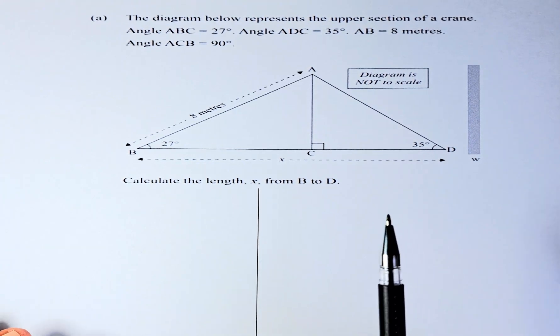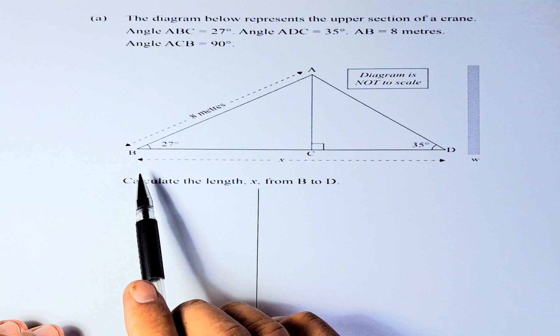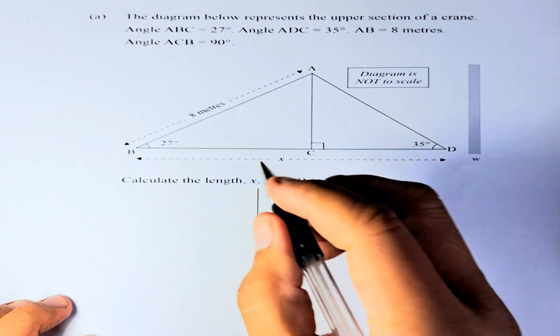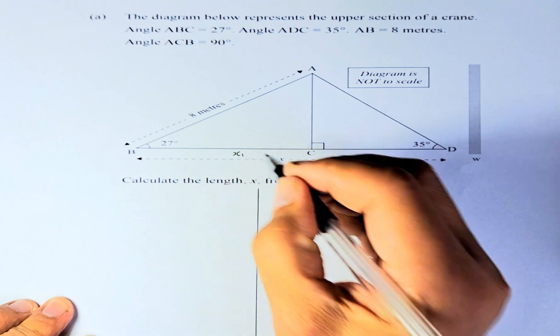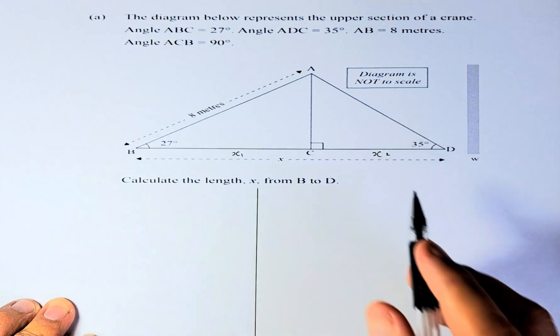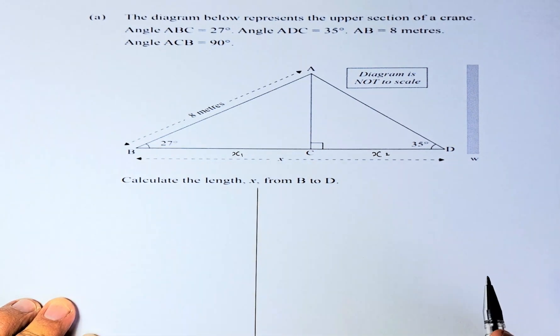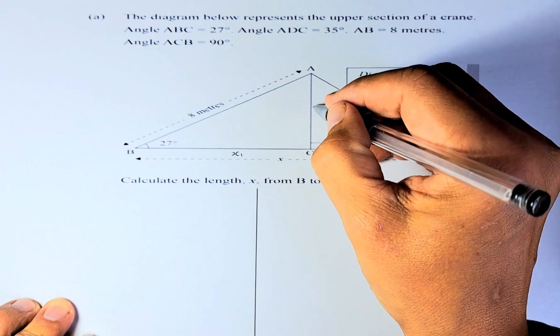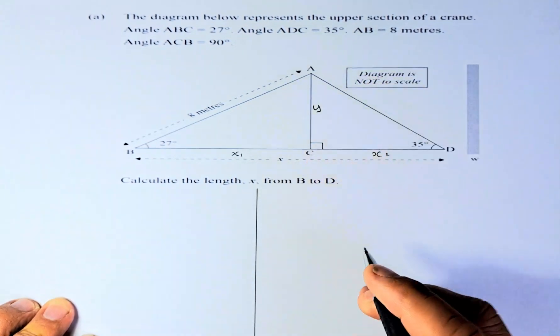We are going to divide the length BD, the X, into two parts: X1, which is BC, and X2, which is CD. We're going to add X1 and X2 to calculate BD. But before that, we need to calculate the height AC, which will be represented by Y.